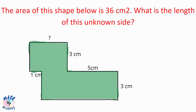Now let's move to the next question. The area of this shape is 36 centimeters squared — what is the length of the unknown side? This is a compound shape made up of two rectangles. I demarcate a line here, giving one rectangle on the left and another rectangle on the right. We need to find the area of both rectangles, and that total area equals 36 centimeters squared.